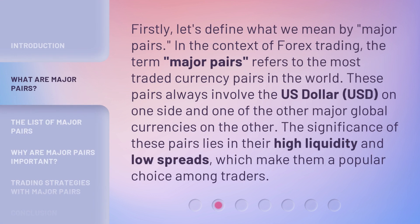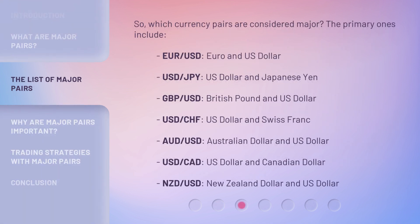Firstly, let's define what we mean by major pairs in the context of forex trading. The term major pairs refers to the most traded currency pairs in the world. These pairs always involve the US dollar (USD) on one side and one of the other major global currencies on the other. The significance of these pairs lies in their high liquidity and low spreads, which make them a popular choice among traders.